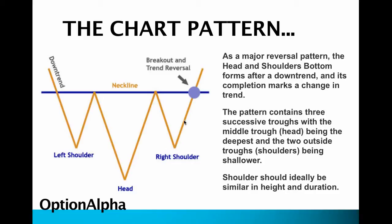Once we get the right shoulder, then we can start to look for the breakout. It's really important that you actually wait for the breakout — don't anticipate it, because the pattern can continue to fall apart and become a triangle or a wedge. You have to wait for the actual breakout of the neckline. You want to have fairly even shoulders and a strong breakout with volume confirmation — that's really the ideal scenario for these inverse head and shoulders patterns.